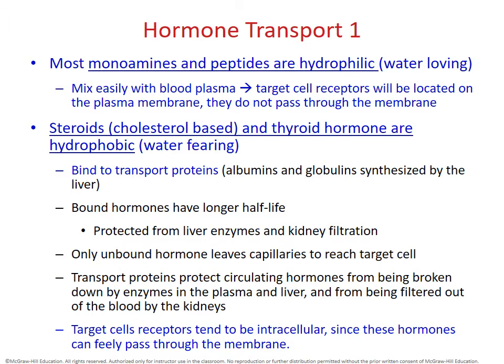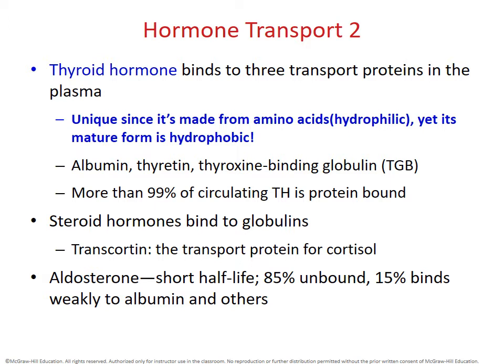A quick note on thyroid hormone: even though it's composed of amino acids, in its final form it is hydrophobic. The most common transport protein it uses is albumin, which is one of the primary proteins floating in blood plasma. Steroid hormones tend to bind to globulins. Aldosterone is another example of a hydrophobic hormone, but the majority of it is unbound, giving it a very short half-life — it doesn't stay in the bloodstream long before being destroyed.